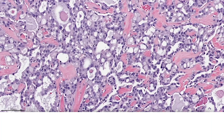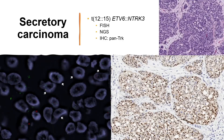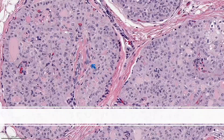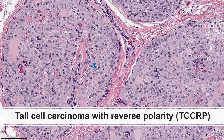Another tumor is secretory carcinoma, which has the characteristic ETV6-NTRK3 fusion. We can use FISH, sequencing analysis, or immunohistochemistry for PAN-TRK to confirm the diagnosis if histology is not classic or not definitive. Another tumor with a unique mutation profile is tall cell carcinoma with reverse polarity, which has a unique IDH2 R172 hotspot mutation. This can be detected by sequencing analysis or mutation-specific immunohistochemistry assay.